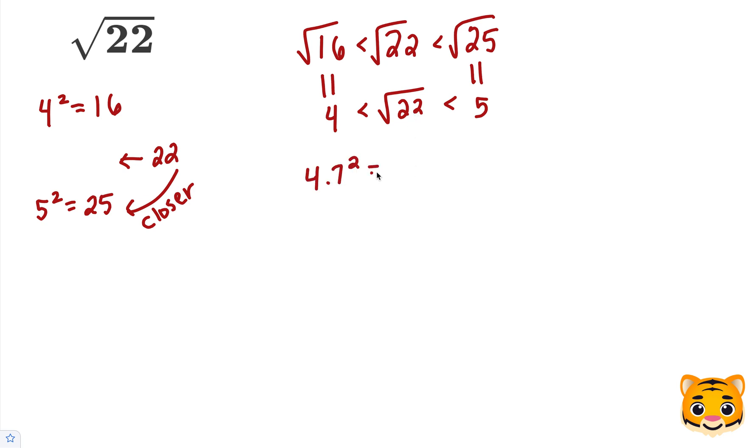Let's try 4.7 squared. When we multiply this out, we're going to see how close we can get to 22. 7 times 7 is 49, carry the 4, and then 4 times 7 is 28, plus 4 is 32.